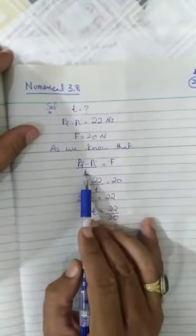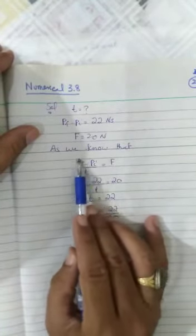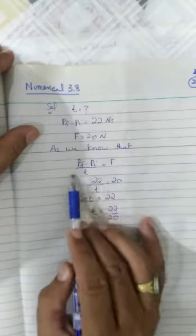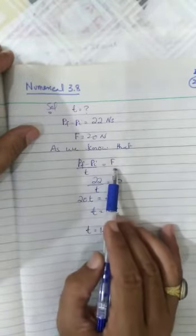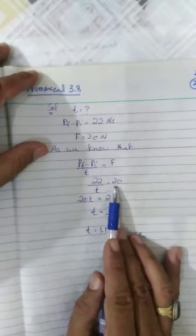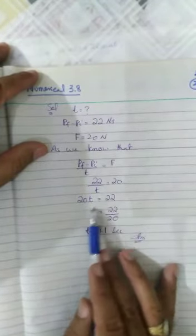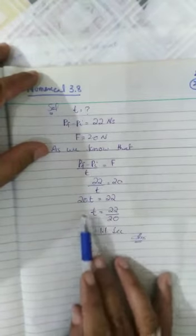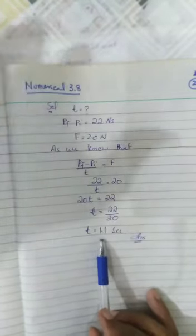As we know, this is basically known as change in momentum divided by T, means rate of change in momentum, which equals applied force F. So change in momentum is given 22, time we have to find, and force is 20. When you take cross multiplication, dividing both sides by 20, you will get 1.1 second. Very simple and easy.